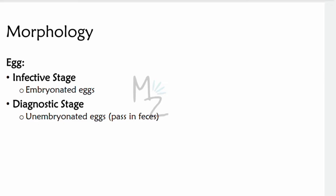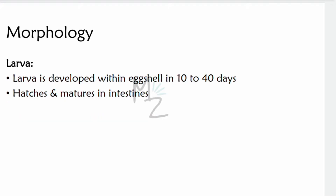Eggs are infective when they are embryonated, and they become diagnostic when they are unembryonated. When eggs pass out of the human body, they are in their diagnostic stage. The larva is developed within the egg shell in 10 to 40 days. It hatches and matures in the intestine, because when eggs are ingested they make their way to the intestine, where they hatch and the larva comes out.